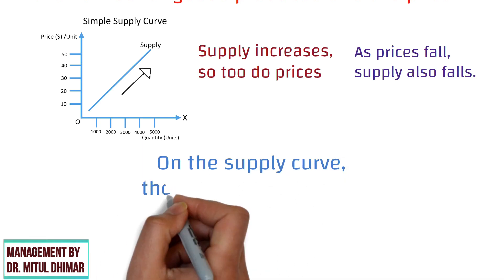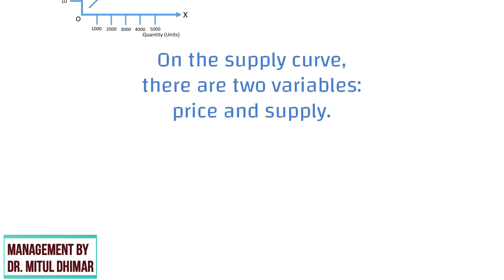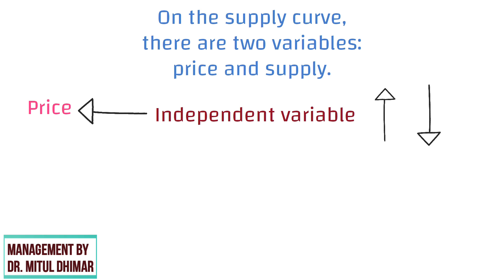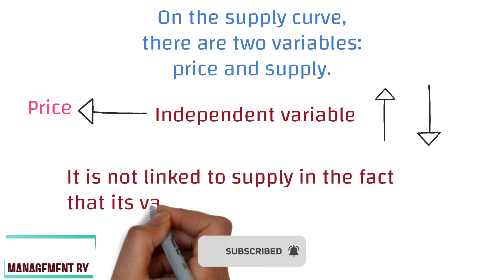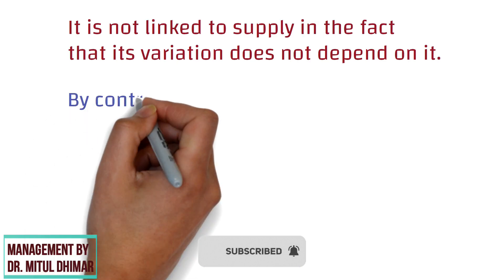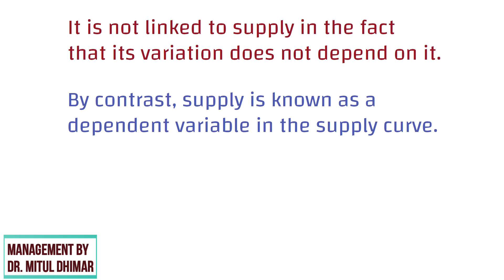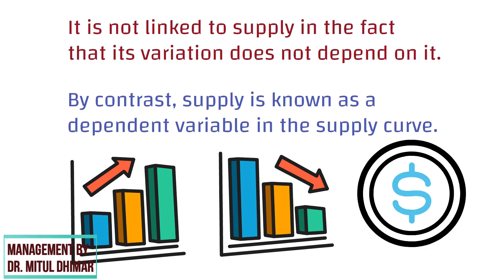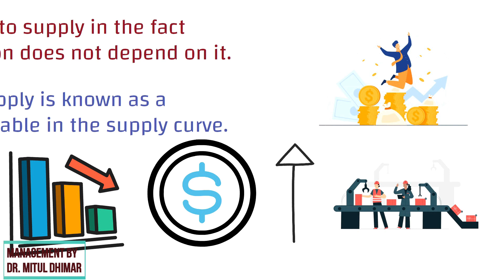On the supply curve there are two variables: price and supply. In the formulation of the supply curve, price is also known as an independent variable. This means that it goes up or down no matter what supply does — it is not linked to supply in the fact that its variation does not depend on it. By contrast, supply is also known as a dependent variable in the supply curve. This means that supply only increases or decreases in reaction to price, so when price increases, businesses look to expand output to capture those profits.